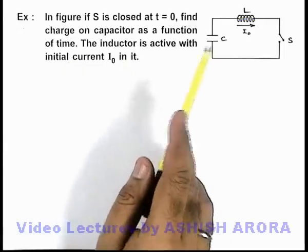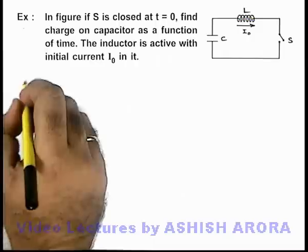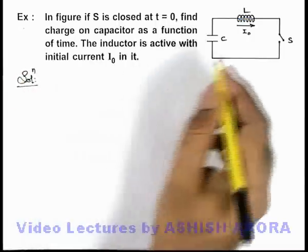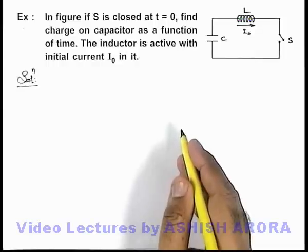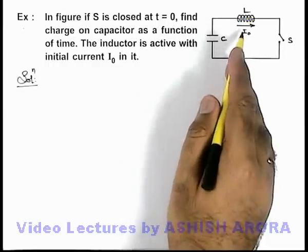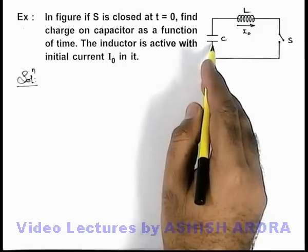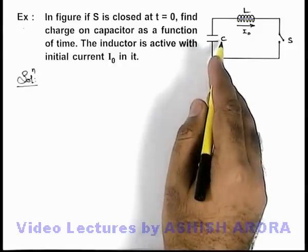Here we are given that the inductor is active with initial current I₀ in it. So we can see the total energy of the circuit at the initial moment is ½LI₀². When the whole energy is converted into electrostatic energy of the capacitor, the charge in the capacitor will be maximum.